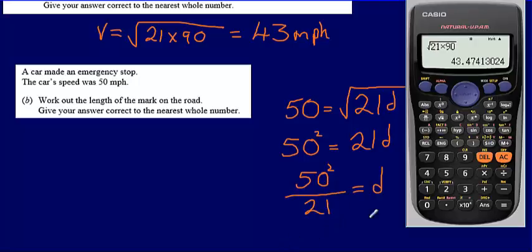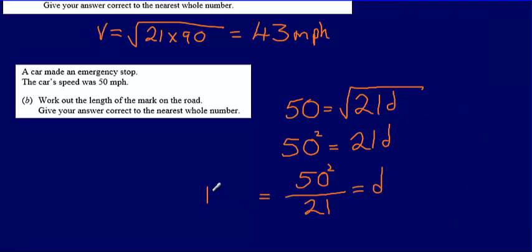Substituting this into a calculator, 50 squared divided by 21, that's going to give an answer of 119. Again, correct to the nearest whole number. We're talking about the length of the mark on the road, so it's going to be 119 meters.